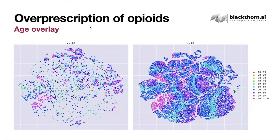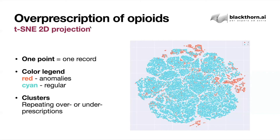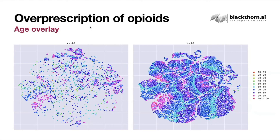Remember the clusters — the upper one, the rightmost, and the bottom one. Pay attention to the bottom one: it is completely made of red points. Very suspicious — we could say it is made only of overdosing opioid patients. But when we overlaid the age, we see that it is almost entirely made from patients of older age. It means that most of these people are just elderly patients living in hospices and taking their medicine.